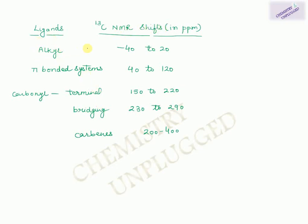Carbon-13 NMR chemical shift ranges for different ligand types: alkyl groups give δ −40 to +20 ppm; π-bonded systems (alkenes, cyclopentadienyl) give δ 40 to 120 ppm; terminal CO ligands give δ 150 to 220 ppm; bridging carbonyls give δ 230 to 290 ppm; and carbene ligands appear at δ 200 to 400 ppm.